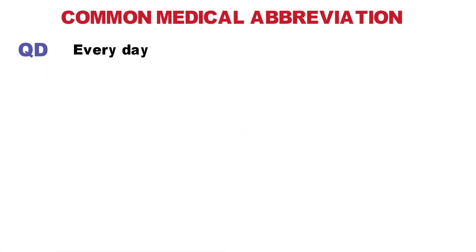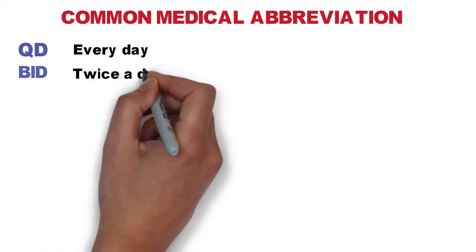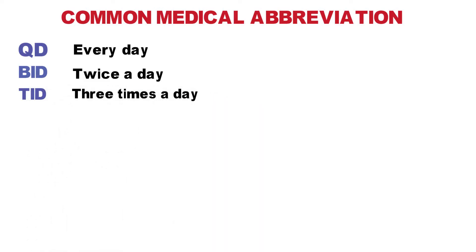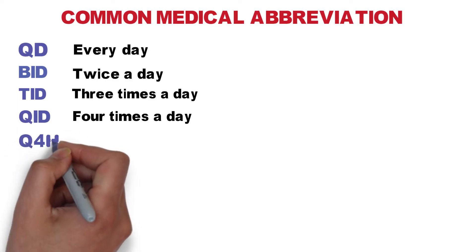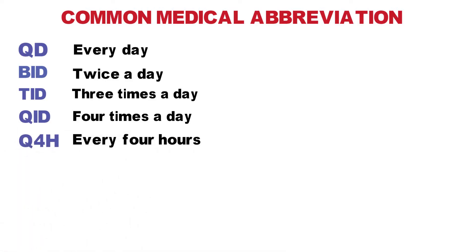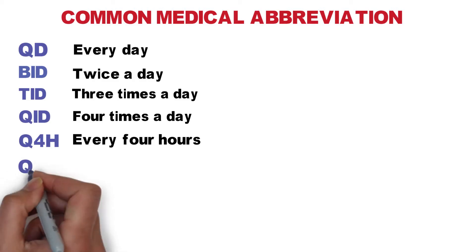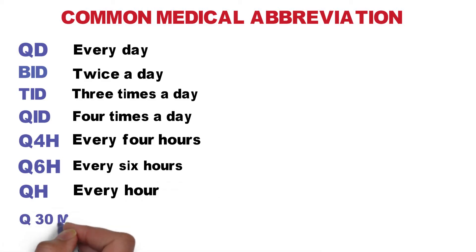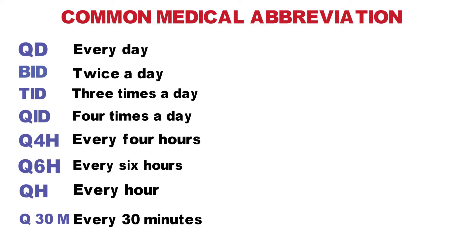First one is QD — QD means every day. Then we have BID, which is twice a day. TID is three times a day. QID is four times a day. You can sort of see the pattern there. Then Q4H — that's every four hours. This can continue: Q6H is every six hours, QH is every hour, and Q30 is every 30 minutes — whatever the doctor orders.